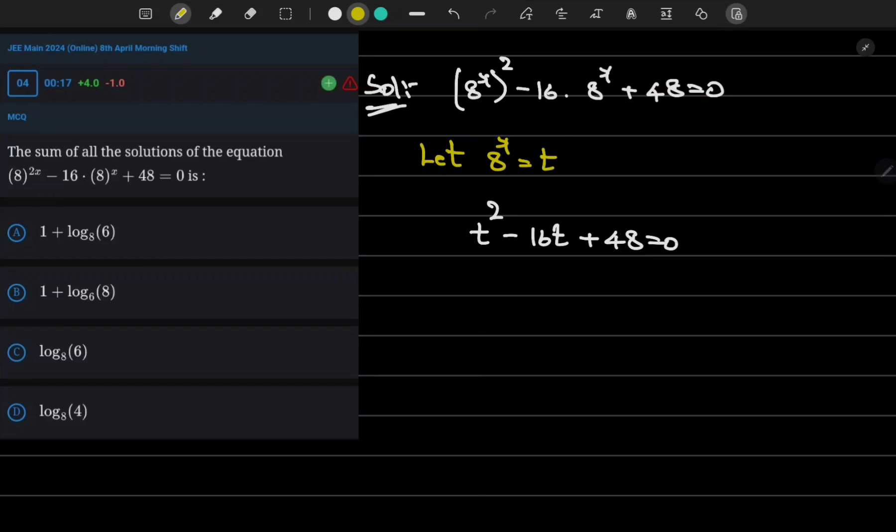And if you observe, your factors are -12 and -4. Then it can be written as (t - 12)(t - 4) = 0.